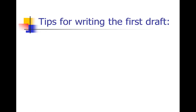Some tips for the first draft. My biggest tip is don't be a perfectionist. A lot of scientists are perfectionists and they want to get it right on the first try. But writing is not the place to be a perfectionist, especially writing the first draft. The goal of the first draft — when I write a first draft, this is my goal — is to get down my ideas in complete sentences in order. And that's it. They don't have to sound good; they have to be complete sentences. That's the bar I set for myself.